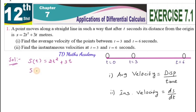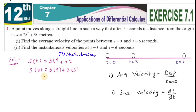For example, s of 3: what is its meaning? At the third second, we find the distance from the starting point. Substitute t = 3: that is 2 into 3 squared plus 3 into 3, which is 2 into 9 plus 9, giving 18 plus 9 equals 27.